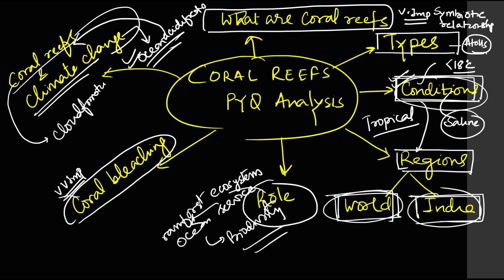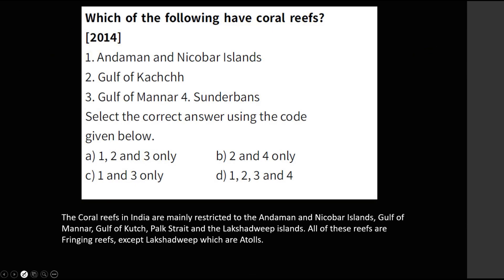Cloud formation was once asked in UPSC and many students made mistakes on that. Now, once we have done this 360-degree analysis, we will go through the PYQs. You can see this PYQ came in the year 2014: 'Which of the following have coral reefs?' Now since the pattern has changed, they may ask 'how many of the below places are coral reefs found?' Coral reefs in India are found in Andaman and Nicobar Islands, Gulf of Mannar, Gulf of Kutch, Palk Strait, and Lakshadweep — so you can cut Sundarbans.